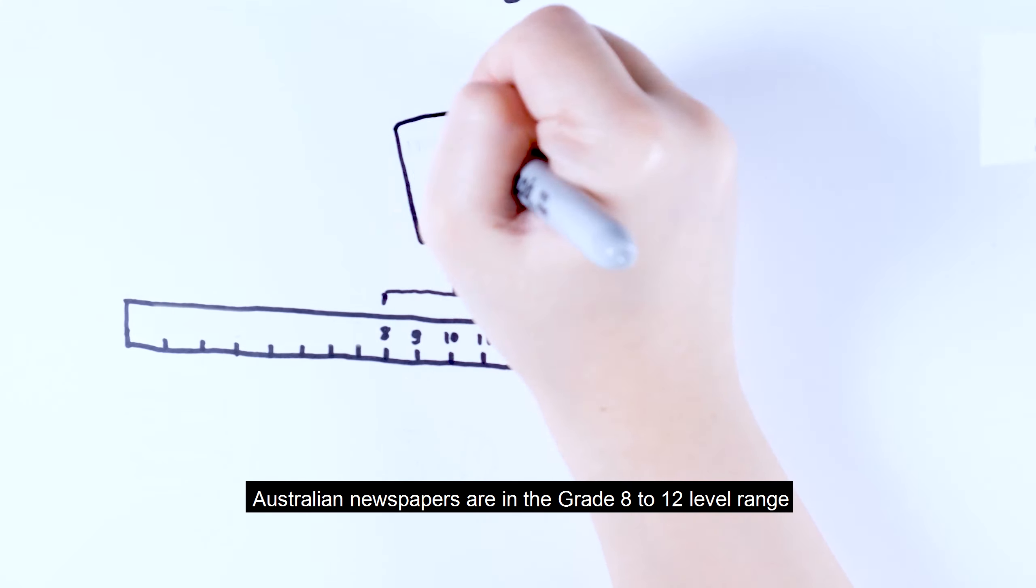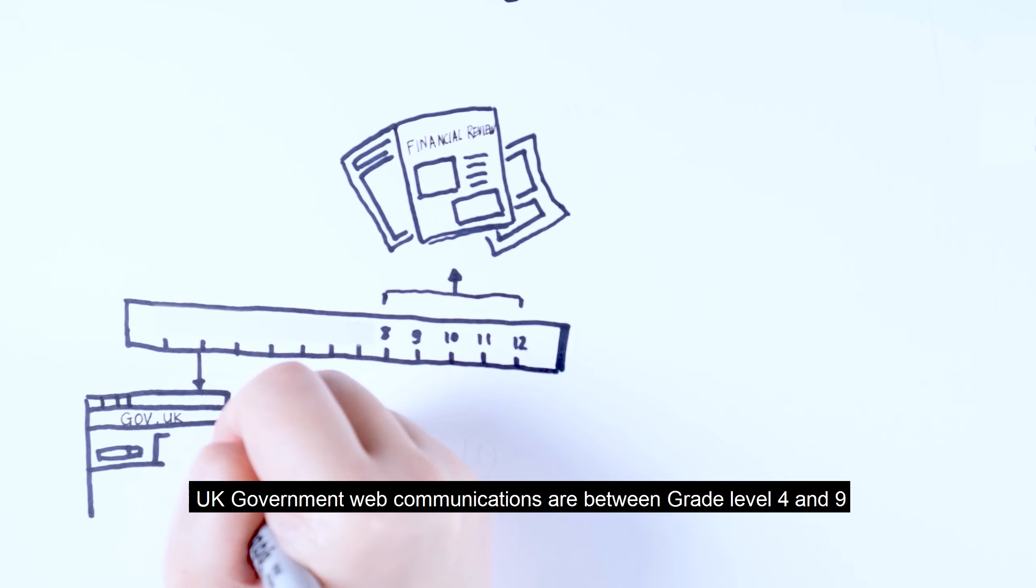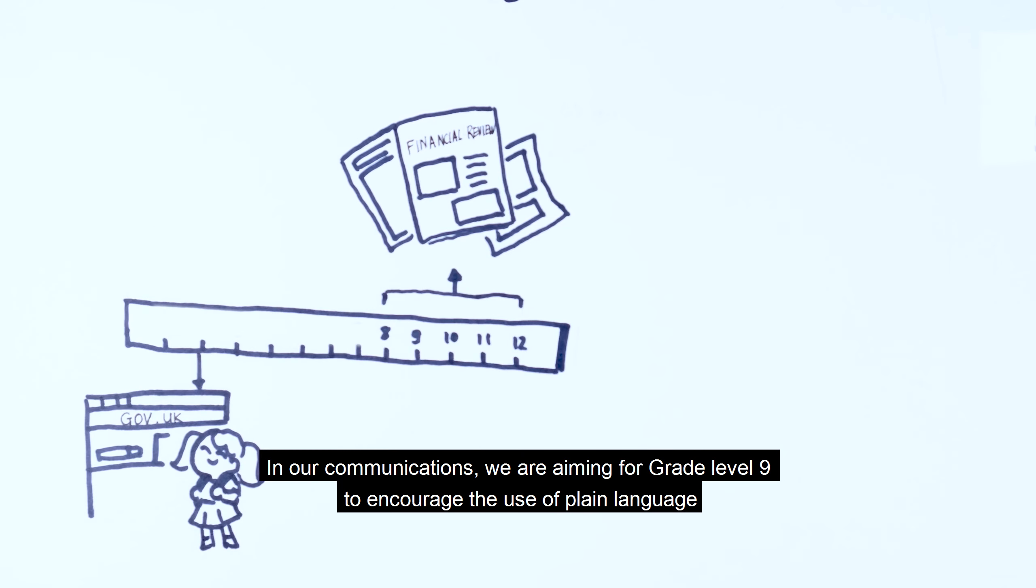Australian newspapers are in the grade 8 to 12 level range. UK government web communications are between grade level 4 and 9. In our communications, we are aiming for grade level 9 to encourage the use of plain language.